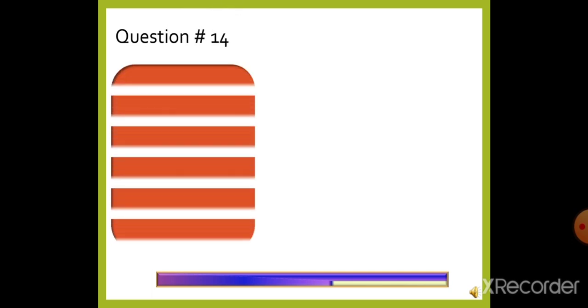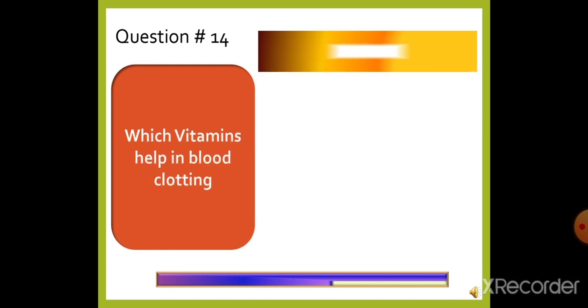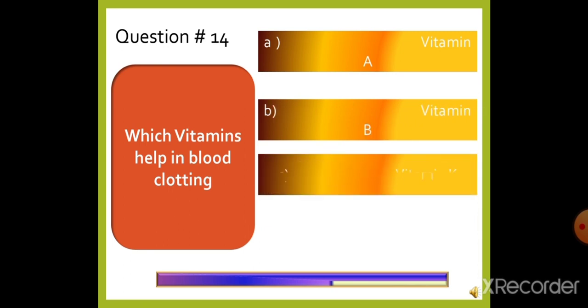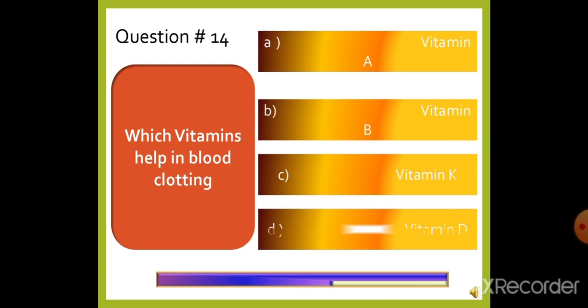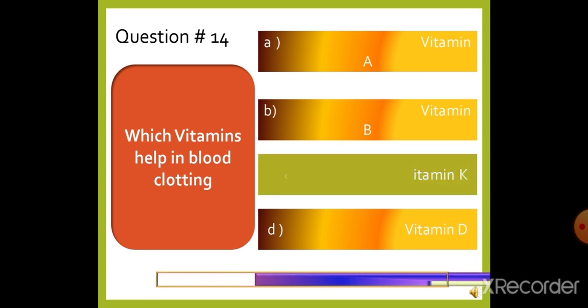Question 14: Which vitamin helps in blood clotting? — option A: Vitamin A, option B: Vitamin B, option C: Vitamin K, or option D: Vitamin D. The right answer is option C, Vitamin K, which helps in blood clotting.